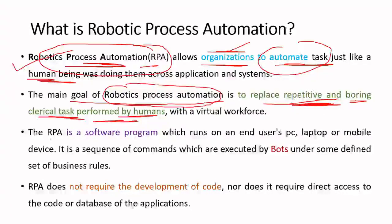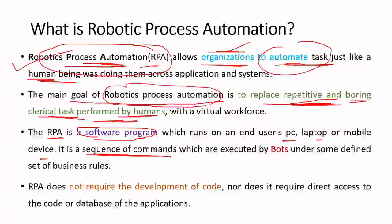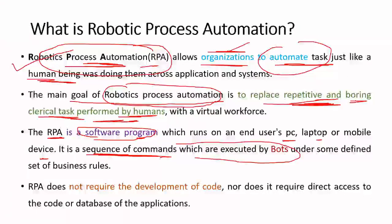At a lower level, according to the author, RPA is basically a software program itself — a program that runs on a PC, laptop, supercomputer, or mobile device. A program is a set or sequence of instructions or commands. So don't think software robots are some new entity — a software robot is basically a program whose job is to execute the sequence of commands given by the programmer.